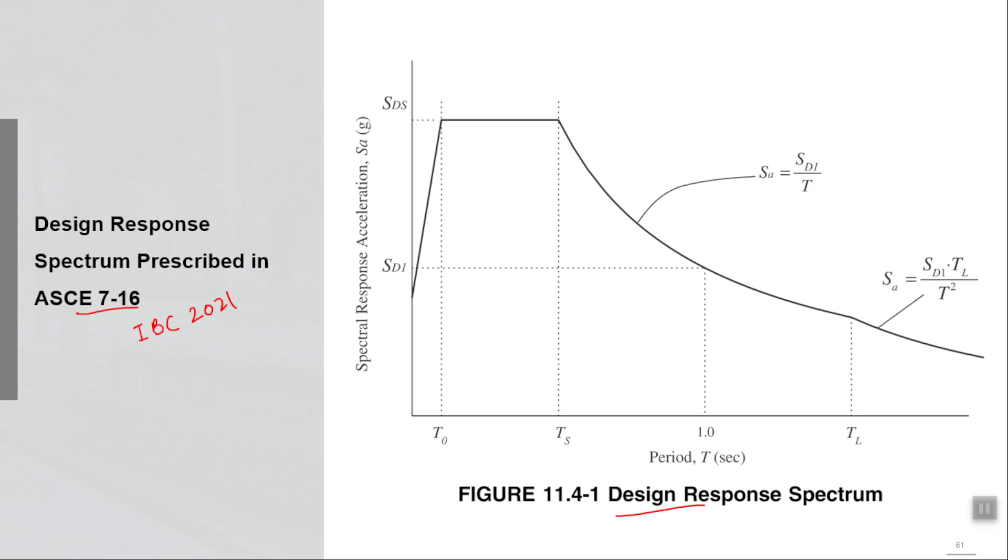This spectrum has a role in time history analysis also. Any guesses where? While modifying the ground motions, we have to scale them up or scale them down such that they start representing the hazard level expected at our site, and the hazard level at our site is defined by this curve. We must modify our ground motions such that their spectra match with this target spectrum. Only then can they be applied for dynamic analysis.